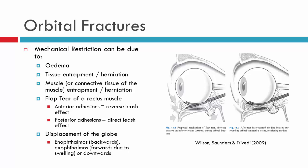Mechanical restrictions can occur for a number of reasons when we have an orbital fracture. We might have edema, for instance. However, we can also have tissue entrapment or a muscle entrapped within the fracture. The other thing that can occur is a flap tear — the image here shows the rectus muscle and the inferior rectus. In this particular instance we actually have a tear of the inferior rectus. Adhesions can develop either anteriorly or posteriorly and create a leash effect, causing a mechanical restriction.